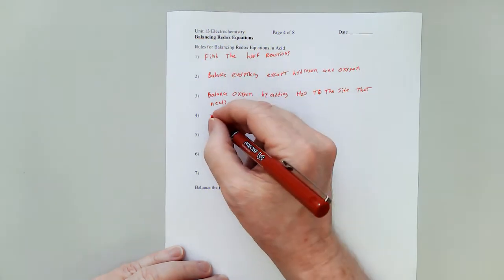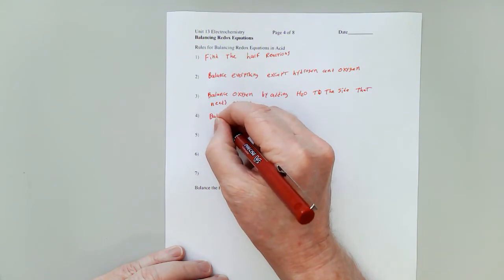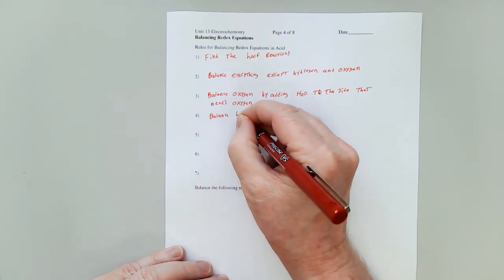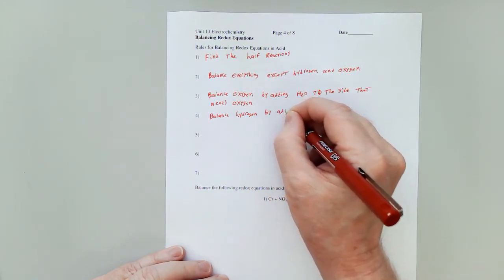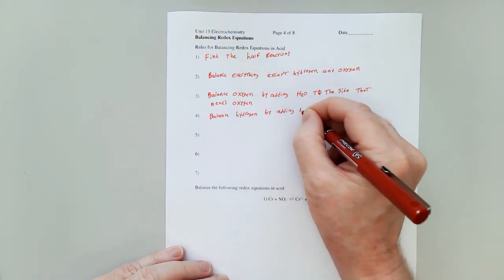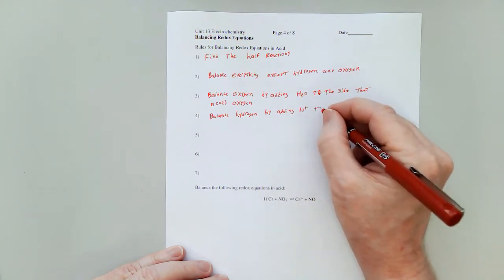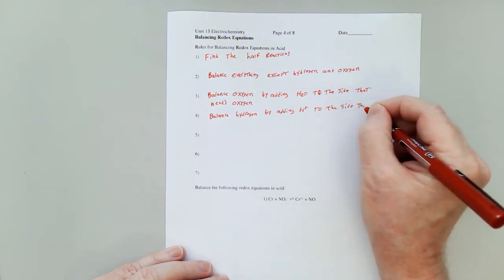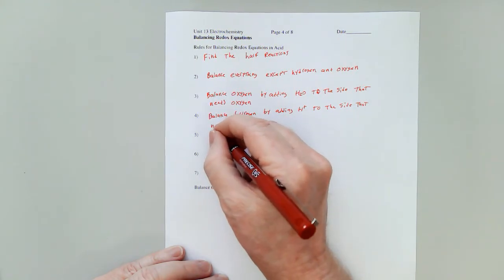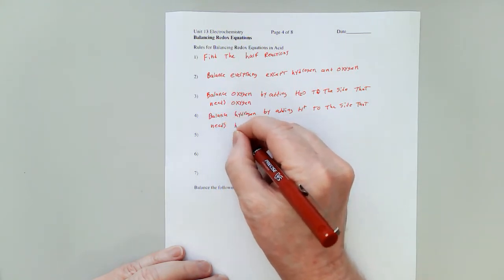Step four is balance hydrogen by adding H plus to the side that needs hydrogen.